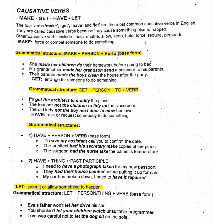Next one is let. Let is used to permit or allow someone to do something. Grammatical structure: let plus person or thing plus base form. Examples: Her father won't let her drive his car. You shouldn't let your children watch unsuitable programs. Tom was careful not to let the dog sit on the sofa. The verbs allow and permit are more formal ways of saying let; however, with allow and permit, use to with the verb.